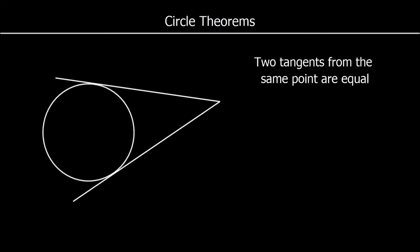In this video we're looking at circle theorems. I'm going to run through seven rules, explaining each one by one. It's a good idea to write these down as you go. With each one there's going to be some text, and if you're asked to give reasons for your answer in a question, that is an example of the text you could write.